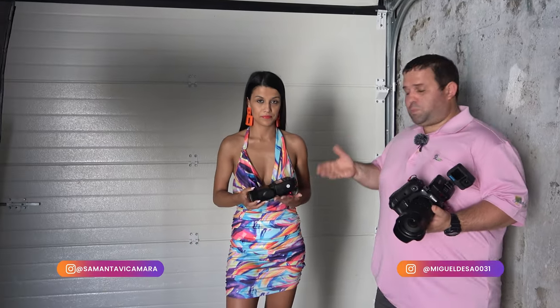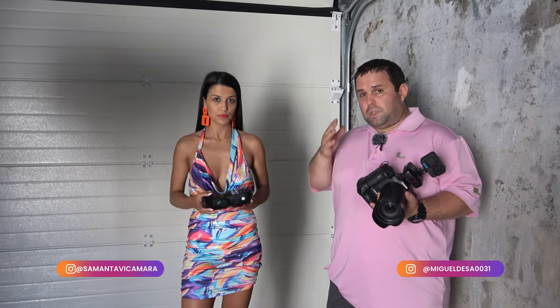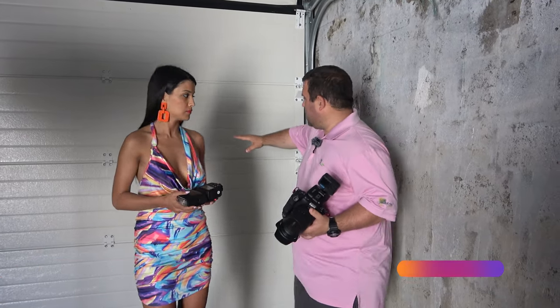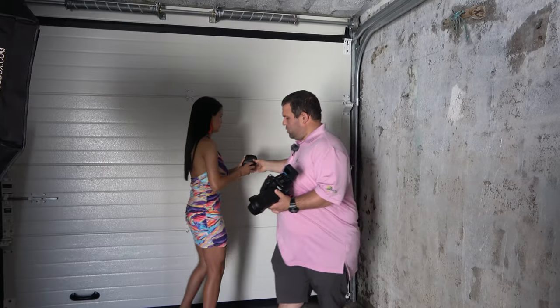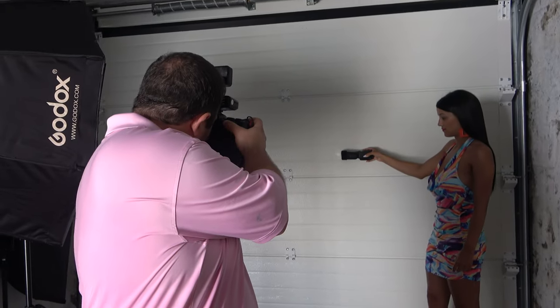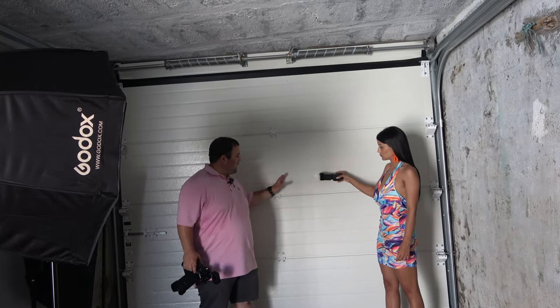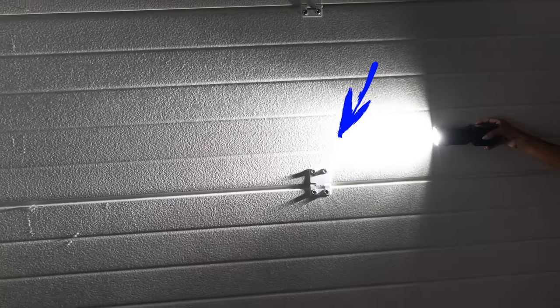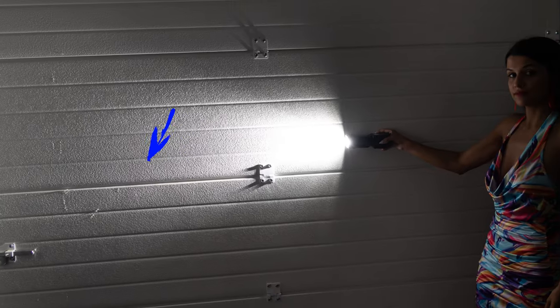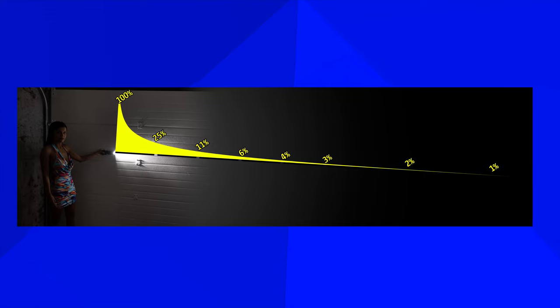Samantha here is holding a speedlight and I'm going to ask her to put the speedlight against the wall like this — it looks like science and it is. I'm gonna take a shot. When the light travels through space it gets very intense very closely, but the light fades very fast.